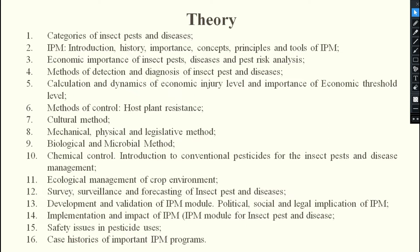The fifth outline covers calculation of EIL, importance of ETL, and some specific unit-based topics. The sixth outline covers all the tools of IPM: host plant resistance and cultural methods.